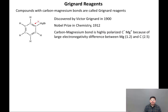The carbon-magnesium bond is highly polarized, C⁻-Mg⁺, because of the large electronegativity difference between magnesium (1.2) and carbon (2.5). Carbon acts like it has a negative charge and is therefore nucleophilic. The Grignard reagent is our answer for a general carbon nucleophile.